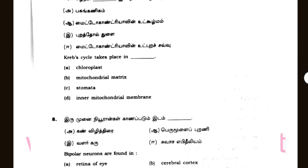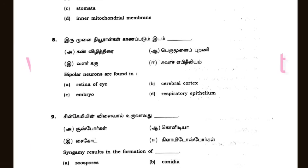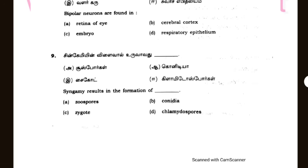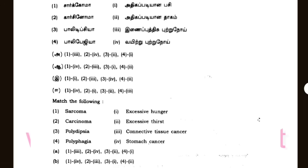The Krebs cycle takes place — you can see that. The bipolar neurons are found — you can see that. That is the 9 mark and the 10 mark question. A point to match it.